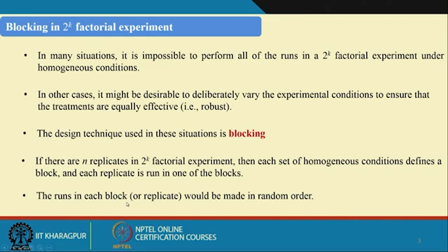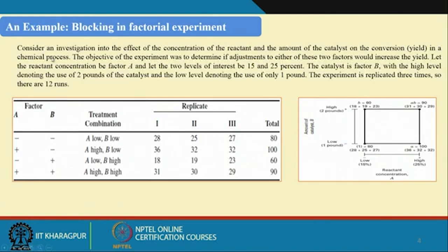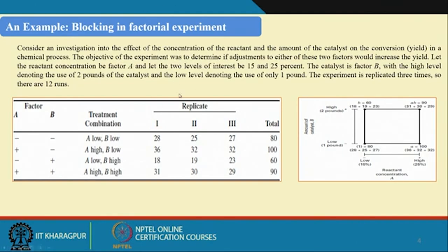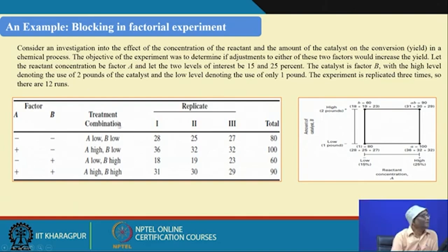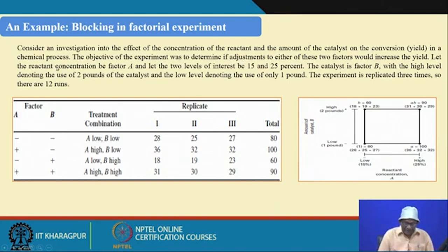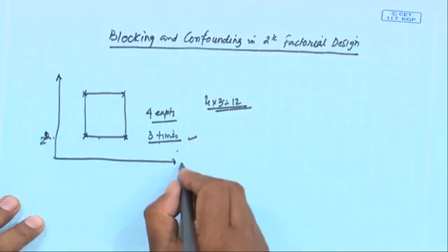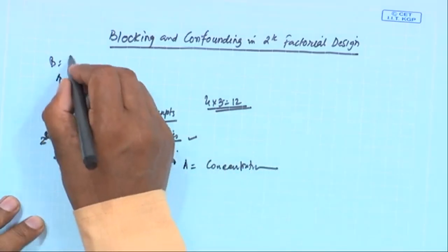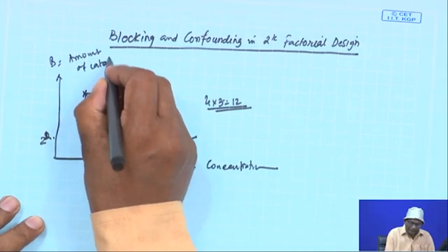Let us look at an example to get a feel of the experiment. The first example: consider an investigation into the effect of concentration of the reactant and the amount of catalyst on the conversion in a chemical process. You have two factors: A is concentration and B is amount of catalyst.